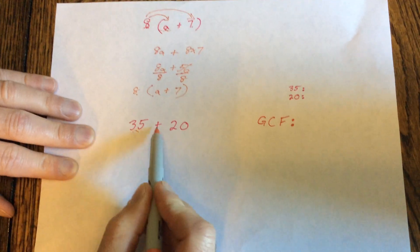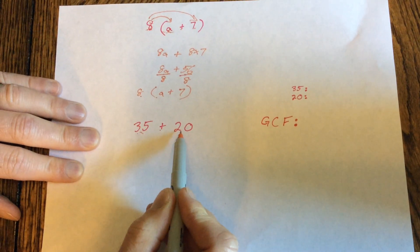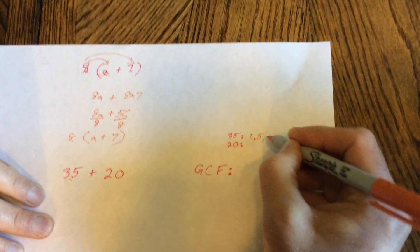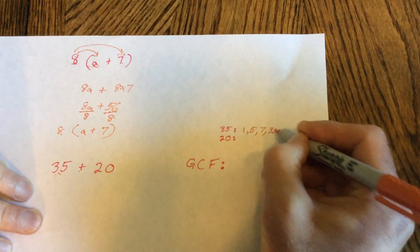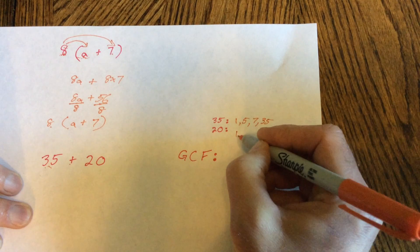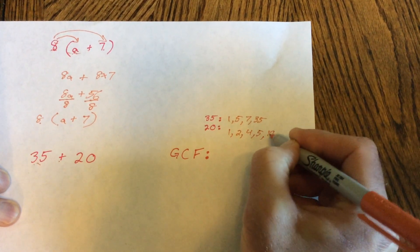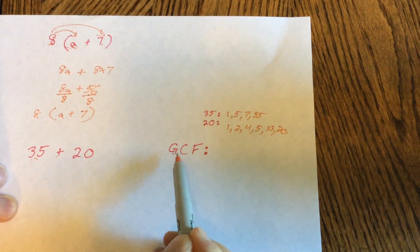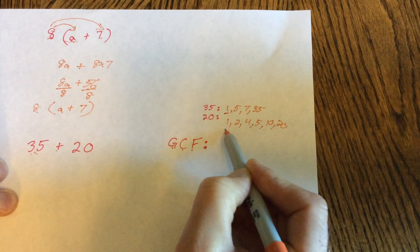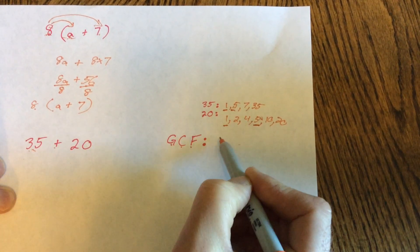So let's do this with this one. 35 plus 20. We have to come up with a number that we can factor out of both 35 and 20. So over here, my factors of 35 are 1, 5, 7, 35. I worked on that earlier in the year. You can go back and review that. Our factors of 20 are 1, 2, 4, 5, 10, and 20. Our GCF, our greatest common factor. Well, our common factors are 1 and 5. That's it. So our GCF is 5.